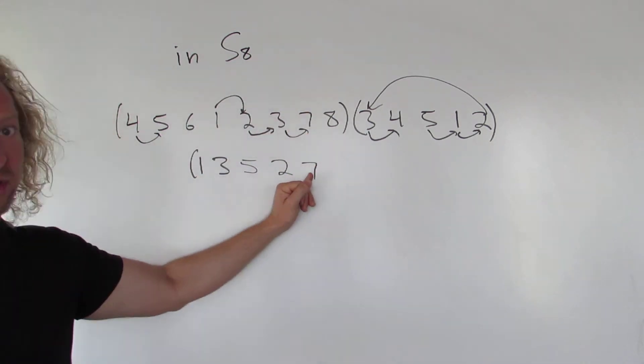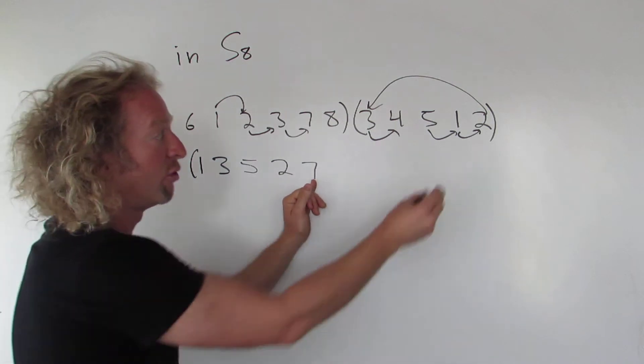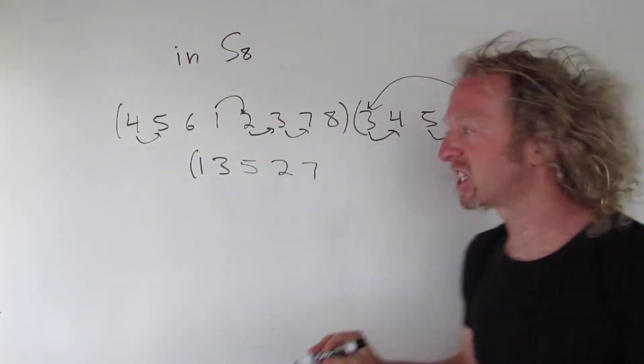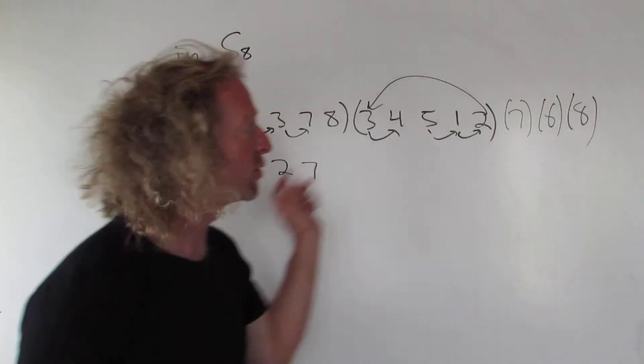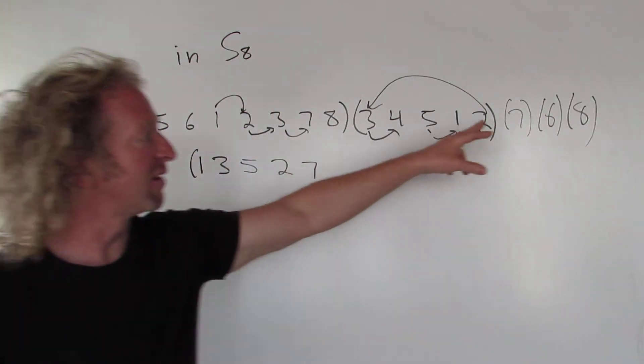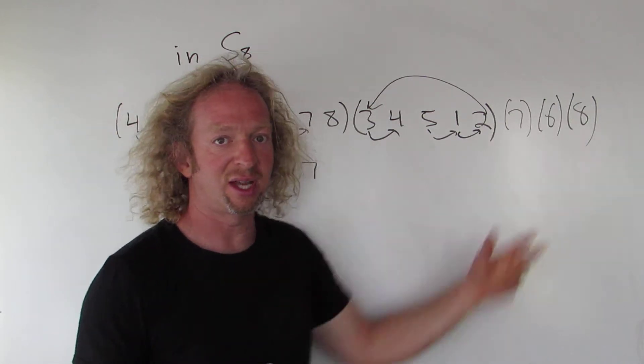Then we go to 7. There is no 7 here. So what happens? 7 is fixed. It's fixed. By the way, what other numbers are missing? 1, 2, 3, 4, 5, 6 is also fixed, and so is 8. Those numbers are missing there, so they're fixed. 7 goes to 7, 6 goes to 6, 8 goes to 8.